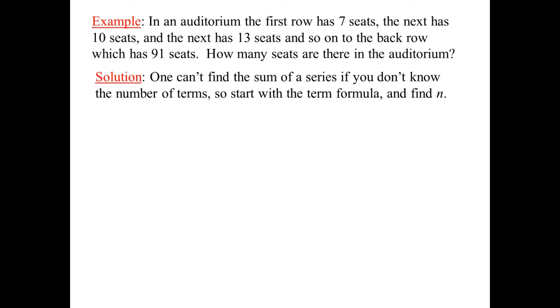How many seats in the auditorium? Well, this is the sum of all the seats. So it's the sum of an arithmetic series. Solution. You can't find the sum of the series if you don't know how many terms there are. This is always true. One can't find the sum of the series if you don't know the number of terms. So start with the term formula. There's our term formula. We know that A is 7, the first term. We can figure out easily that D is 3 because the second row has 10 seats and the first row has 7 seats. 10 minus 7 is 3. 13 minus 10 is 3. And we know the last term is 91. So T sub n is 91. That 91 is going right there. And we'll plug them all in. Multiply out. Collect like terms. Drag the 4. Divide by 3. n equals 29.